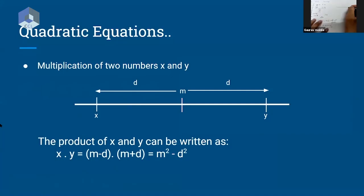Let's say I take two numbers x and y. I can find the midpoint, let's call it m, and the midpoint would be at distance d from both numbers. Therefore, the product x into y can be written in form of the mean m, where x is m minus d and y is m plus d.